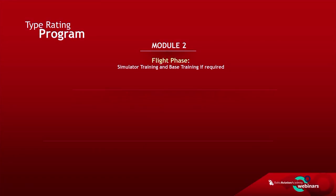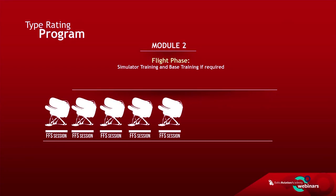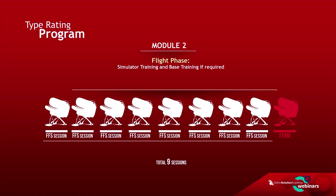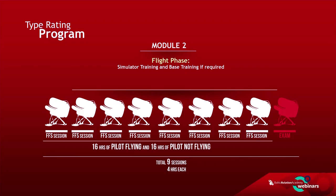After successfully completing your ground phase with all progress tests and the final exam, your second step will be the flight phase. The flight phase consists of 9 sessions in a full flight simulator. Each FFS session takes 4 hours of flight training for a crew of 2 pilots. A minimum required period is 11 days, during which training time is divided between 16 hours of pilot flying and 16 hours of pilot not flying. The exam lasts 4 hours for 2 pilots, making 36 hours in total of pilot practical training.